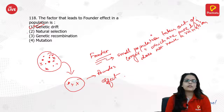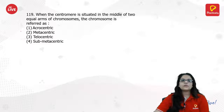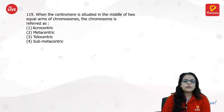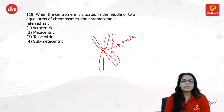When the centromere is situated in the middle of two equal arms of a chromosome, whenever it's in the middle with equal arms on both sides, it will be metacentric.